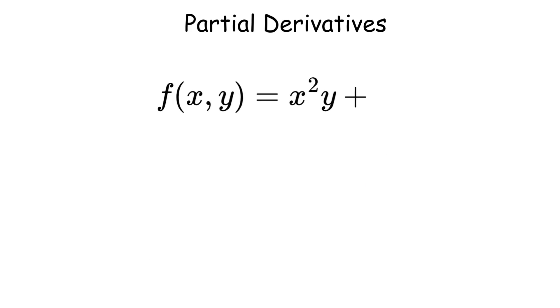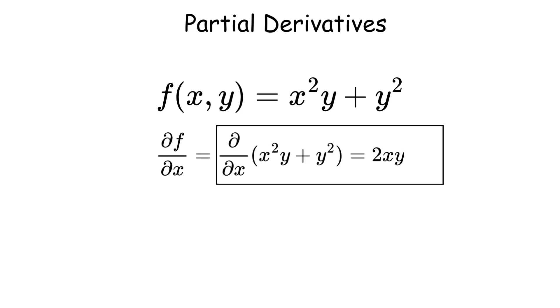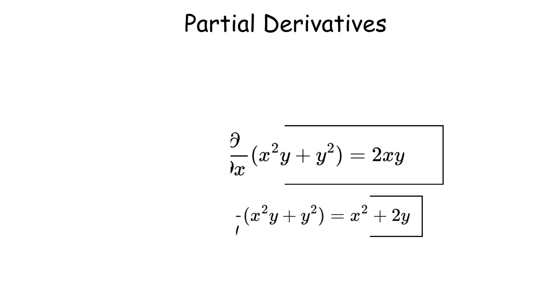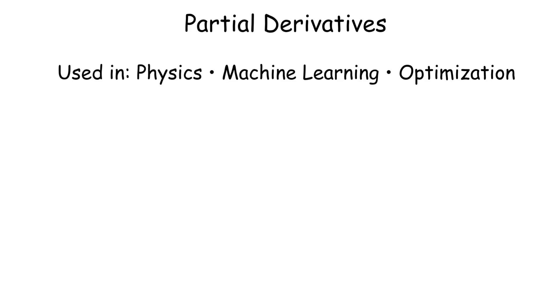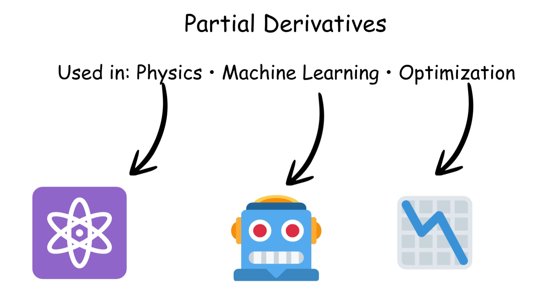For example, for f of x and y equals x squared times y plus y squared, the partial derivative partial f over partial x equals 2xy, and partial f over partial y equals x squared plus 2y, showing how the function changes in each direction. These are critical in fields such as physics and machine learning.